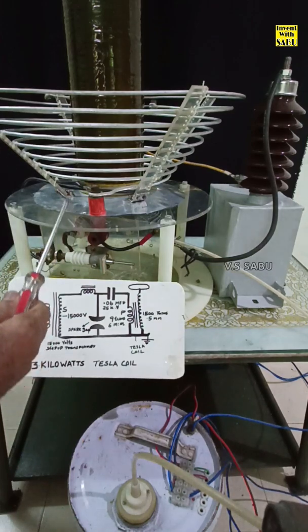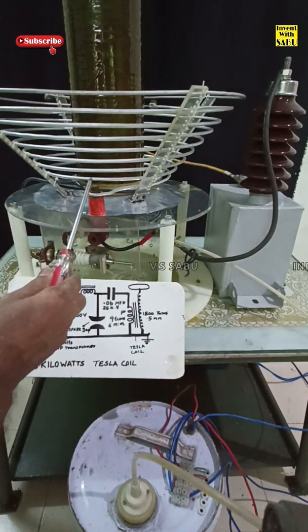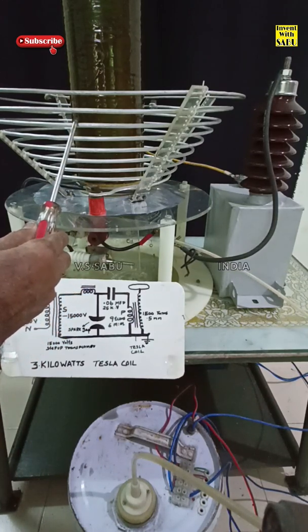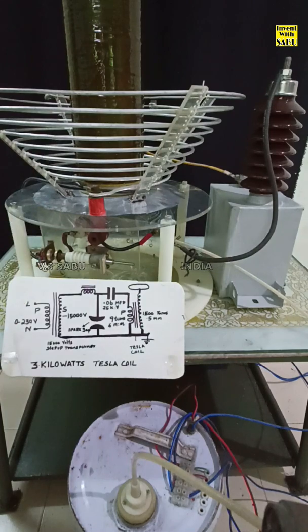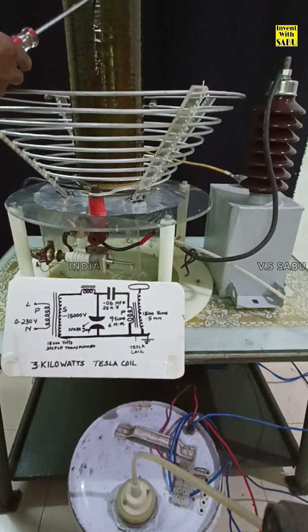Tesla coil is an air core transformer. This is the primary windings, 9 turns, 6mm aluminum wire used. This is the secondary windings, 1500 turns, 0.5mm copper wire used.